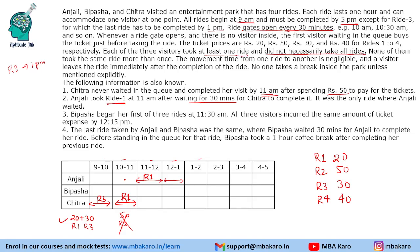Vipasha began her first of three rides at 11.30am. All three visitors incurred the same amount of ticket expense by 12.15pm — so by 12.15pm all of them had spent 50 rupees. Chitra spent 50 rupees. Vipasha won't take another ride before 12.30pm, so her first ride must cost 50 rupees — meaning her first ride is R2. At 12.15pm Anjali is on a ride and has already paid for it, so she must also have spent 50 rupees. Since ride 1 costs 20 rupees, she must currently be on ride 3.